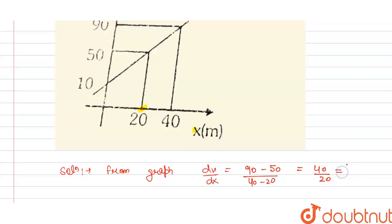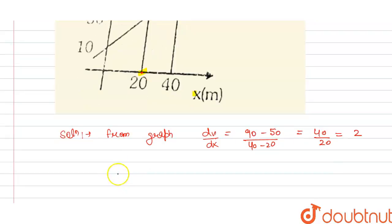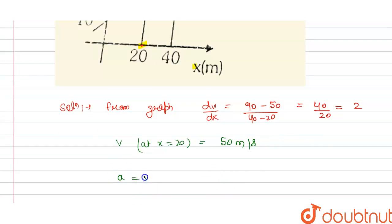So from this we get dv/dx is 2, and we have the velocity v at x equals 20 is equal to 50 meters per second. So we have the acceleration is equal to v times dv/dx. So velocity at x equals 20 is 50, and this is multiplied by 2, so we get 100 meters per second squared. And this is the answer for the question. Thank you.